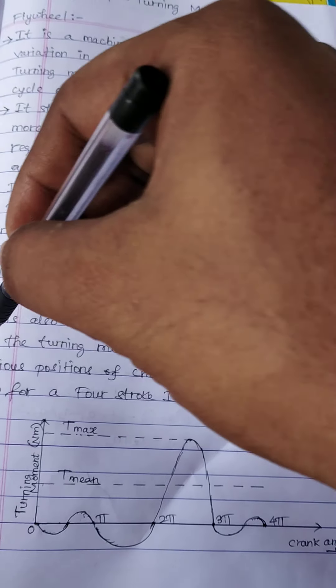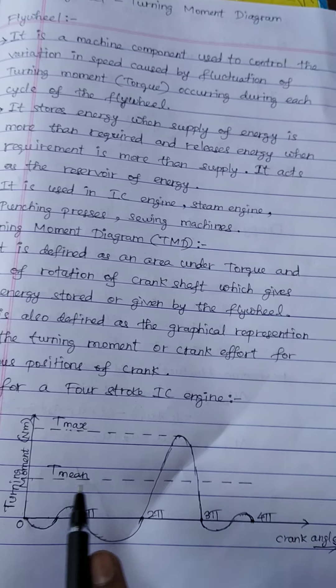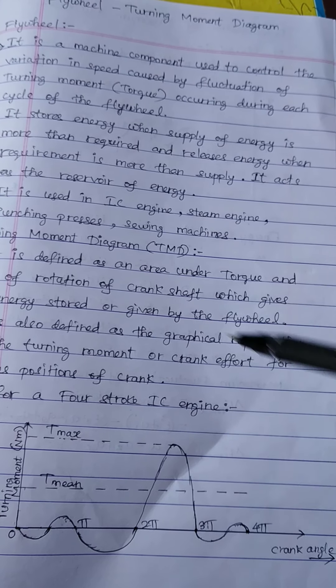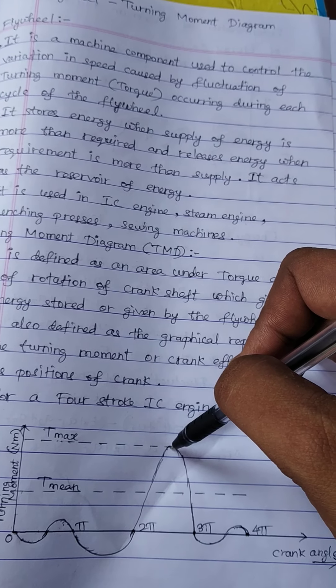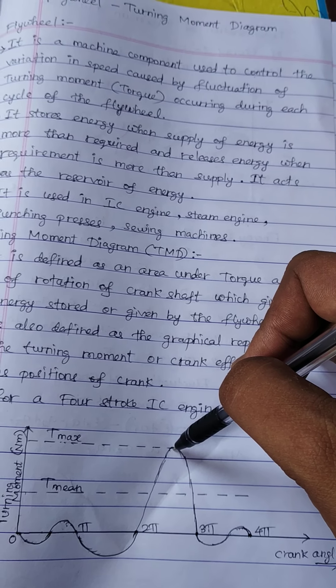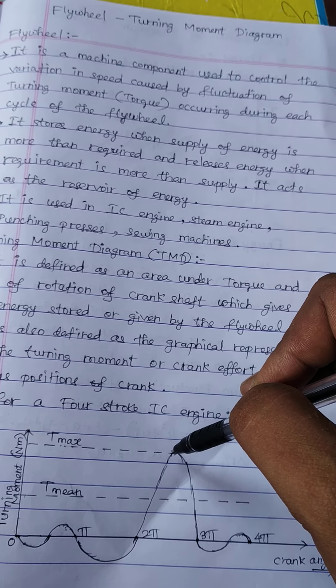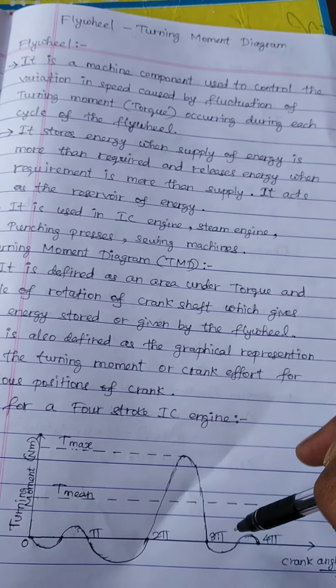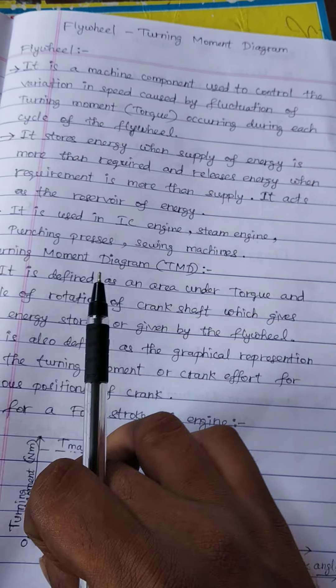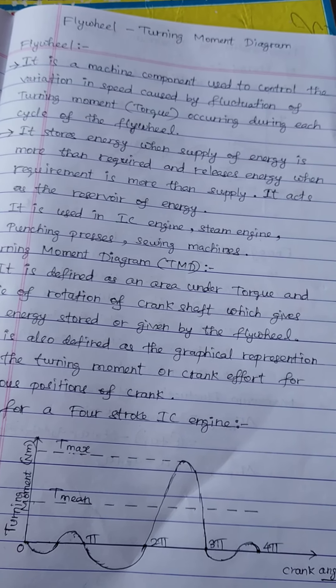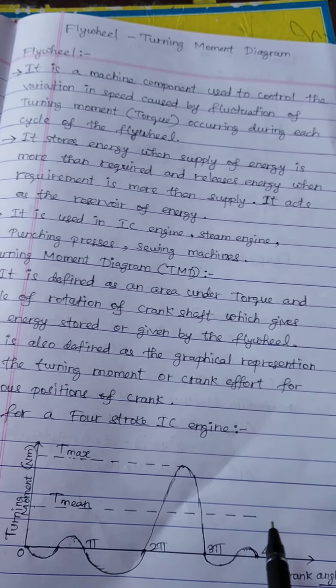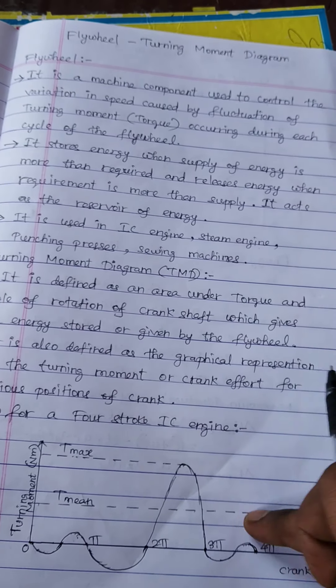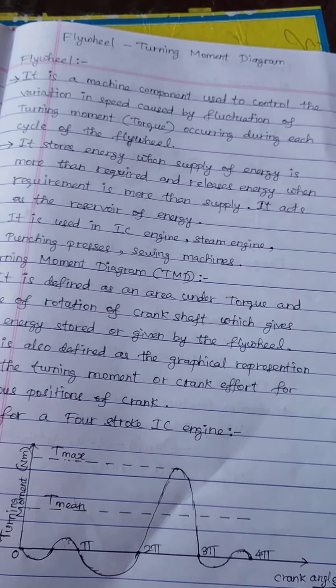The main purpose of the flywheel is to produce the mean torque, because this is the torque needed for the running of the engine. In the engine, we have the maximum torque at the power stroke, and we don't need this much energy for all strokes. So for all other strokes, this extra energy will be supplied for the continuous rotation of the engine — that is the function of the flywheel. The mean torque multiplied by the total angle gives the work done per cycle.